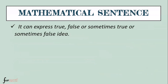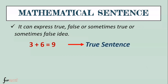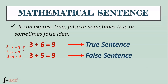Now, in a mathematical sentence, it can express a true, false, or sometimes true or sometimes false idea. For example, 3 plus 6 equals 9 is a true sentence because 3 plus 6 is really equal to 9. How does it become a false sentence? We can change the plus to minus — 3 minus 6 equals 9 is false. Or we can change a number: 4 plus 6 equals 9 is false. Or change the result: 3 plus 6 equals 14 — that is also false. So 3 plus 5 equals 9 is also a false sentence.